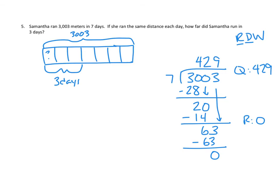429. So this is what we get when we divide 3003 divided by seven. So each one of these blocks up here is going to be 429. But remember, we are looking for three days' worth of her running. So we need to actually do one more step, which is that we need to take the number of meters she ran in one day, and then we either need to do repeated addition or multiplication to figure out how many she ran in three days.